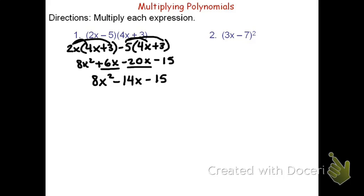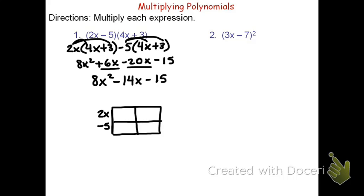We could also do the problem with generic rectangles. To do the generic rectangles, we'll start by drawing a large rectangle and split it into four boxes. The reason we're doing four boxes is we have a binomial times a binomial — that is something with 2 units by 2 units. We'll take the 2x minus 5 and put it on the side, and then 4x plus 3 up top. We'll then distribute, which can be thought of as finding the area of each particular box. The top left one is 2x by 4x — that's 8x squared.